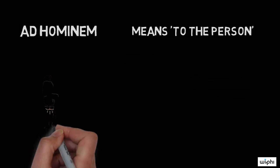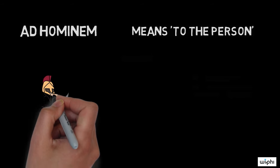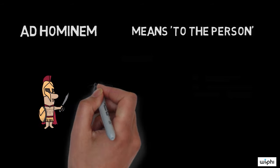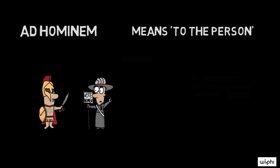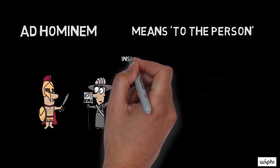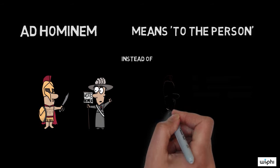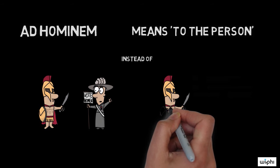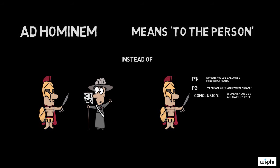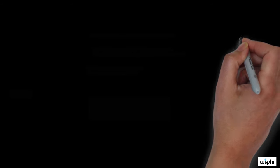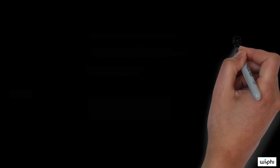The Latin phrase roughly means 'to the person,' and that's exactly what this fallacy is. It's an attack against the person making the argument rather than an attack against the argument itself. Let's see if we can pin down exactly what this means by using an example.